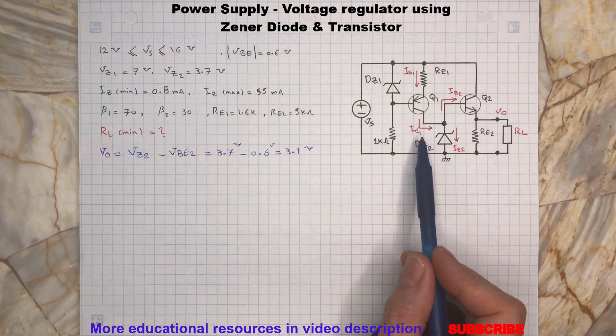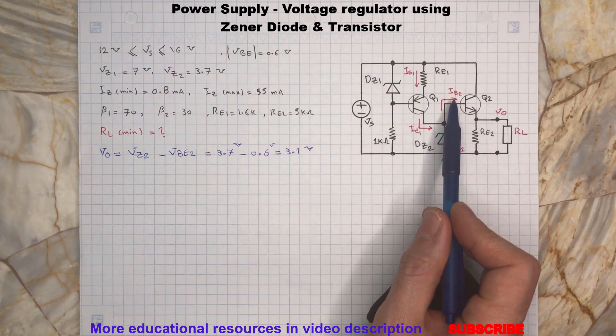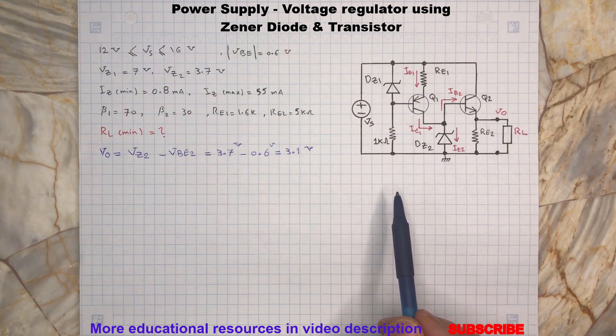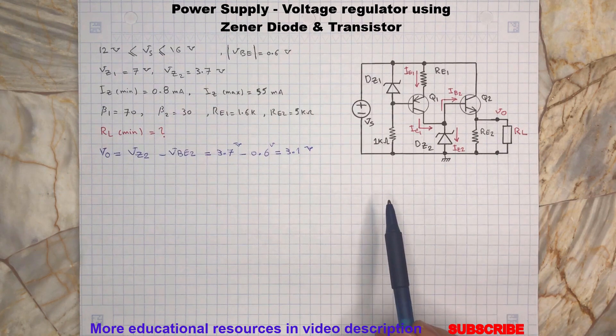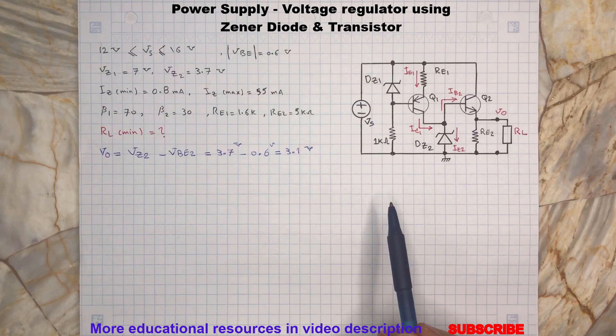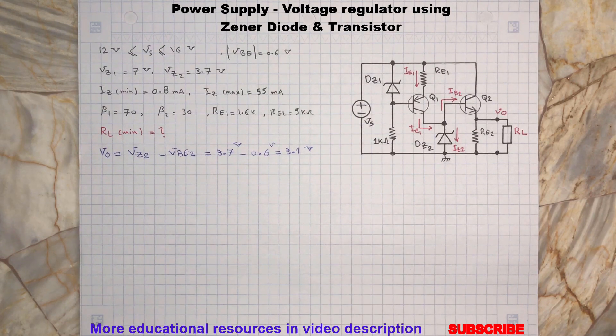So by finding both IC1 and IB2 we can determine for what RL minimum the current for the Zener diode 2 will be at least 0.8 milliamp. Here is our key equation need to be solved.